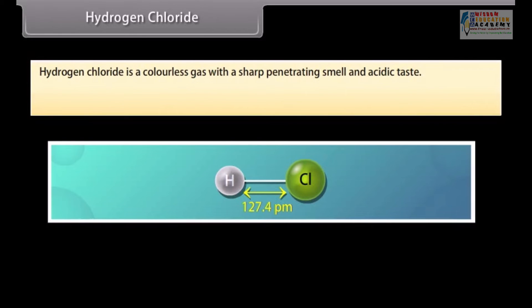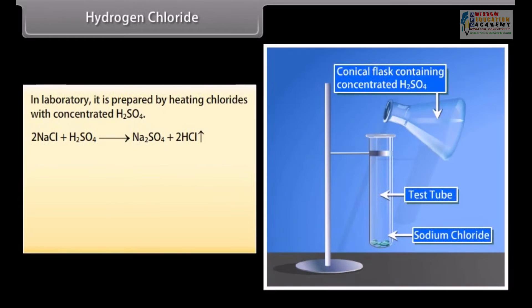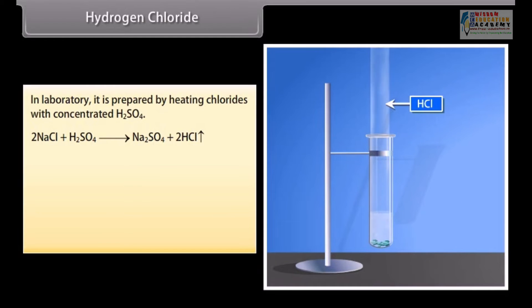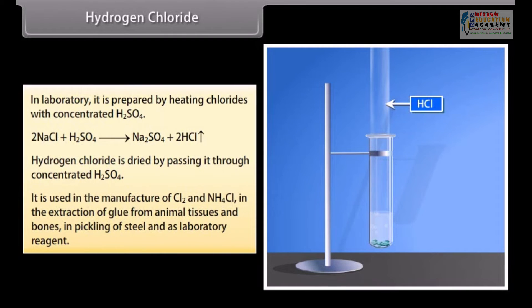In 1648, Glauber obtained hydrogen chloride by heating common salt with concentrated sulfuric acid. It is a colorless gas with a sharp penetrating smell and acidic taste. It is extremely soluble in water — one volume of water dissolves about 450 volumes of hydrogen chloride under ordinary conditions. It can be easily liquefied to a colorless liquid or frozen to a colorless solid. In the laboratory, it is prepared by heating chlorides with concentrated H₂SO₄ and dried by passing through concentrated H₂SO₄. It is used in the manufacture of Cl₂ and NH₄Cl, in extraction of glue from animal tissues and bones, in pickling of steel, and as a laboratory reagent.